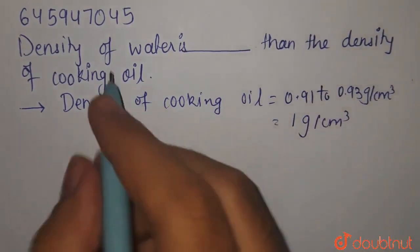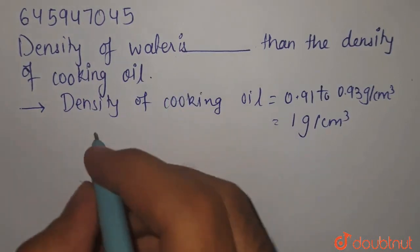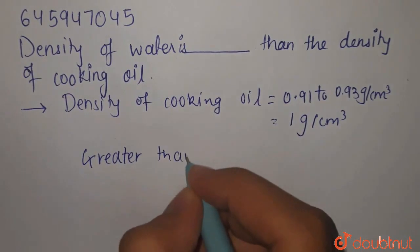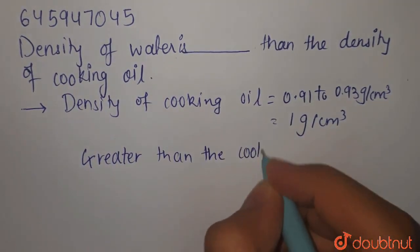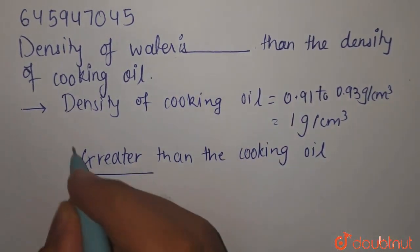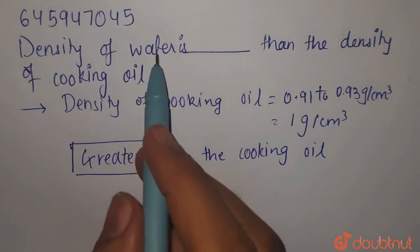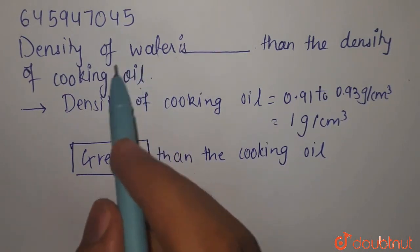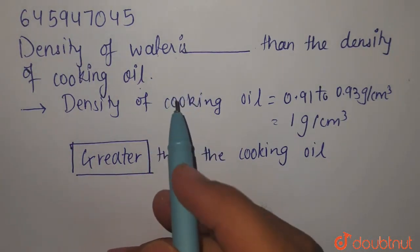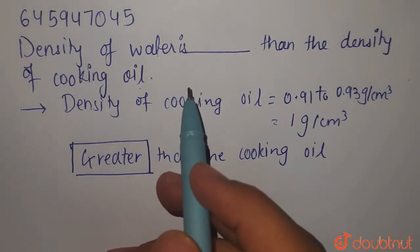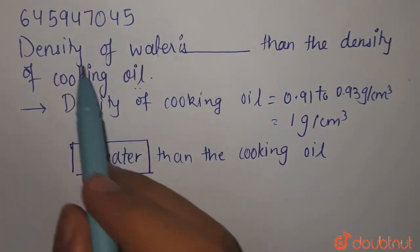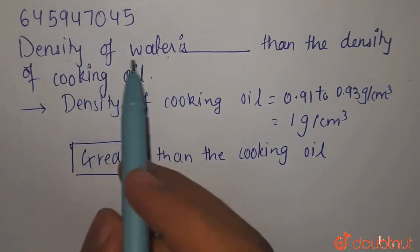So, here we can write straight away the answer that the density of water is greater than the cooking oil. But to support our argument, हम ये भी कह सकते हैं कि whenever we mix water and oil together, तब oil क्या करता है? वो surface पे float करता है. वो water के साथ mix नहीं हो जाता. तो ये भी एक और proof है जिससे हमें पता चलता है that the density of cooking oil is smaller than the density of water.